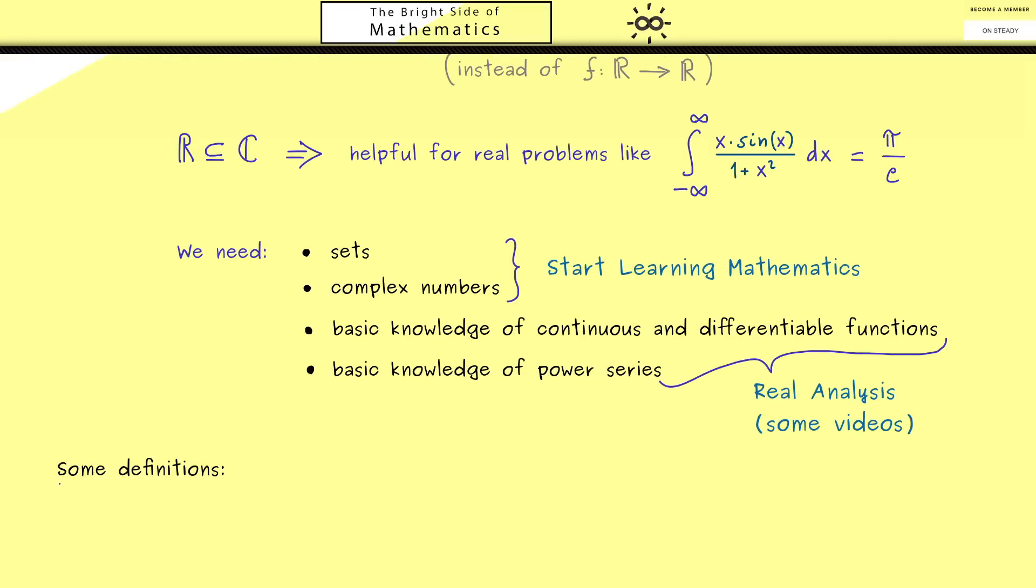The first part will be about some definitions we will definitely need throughout this course. First, the complex numbers form a set with a distance function. Formally, we call such a construction a metric space, but it's not complicated at all. It just means that the distance between two elements of the set makes sense.